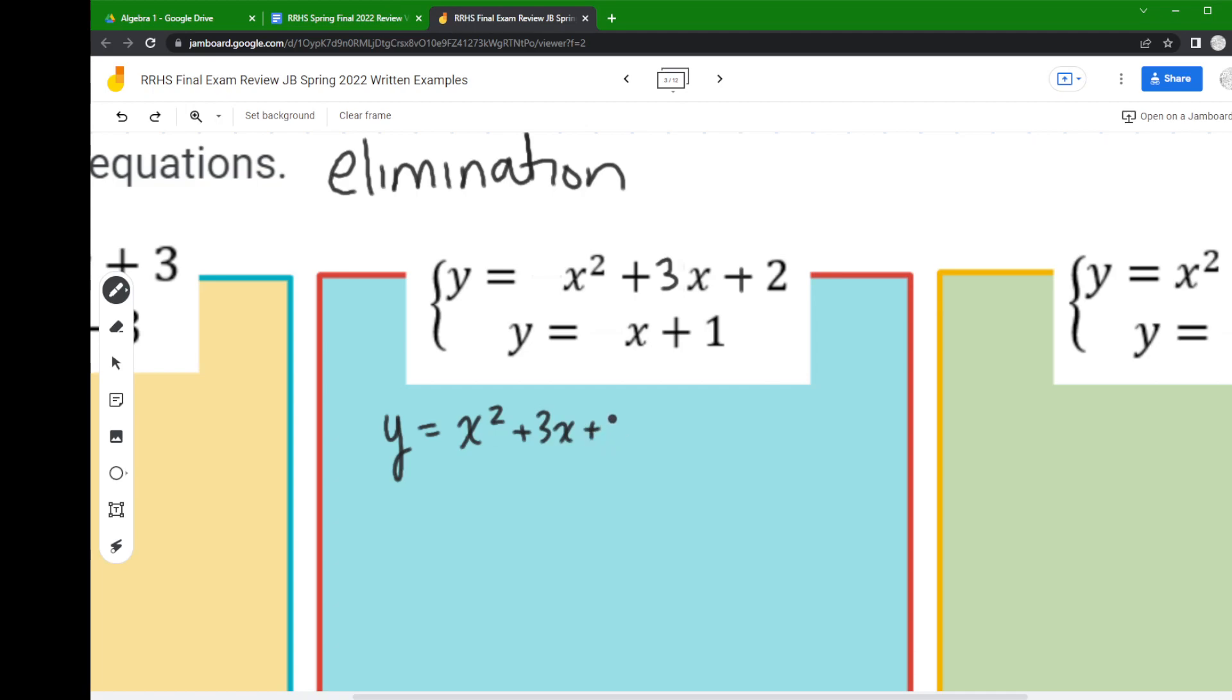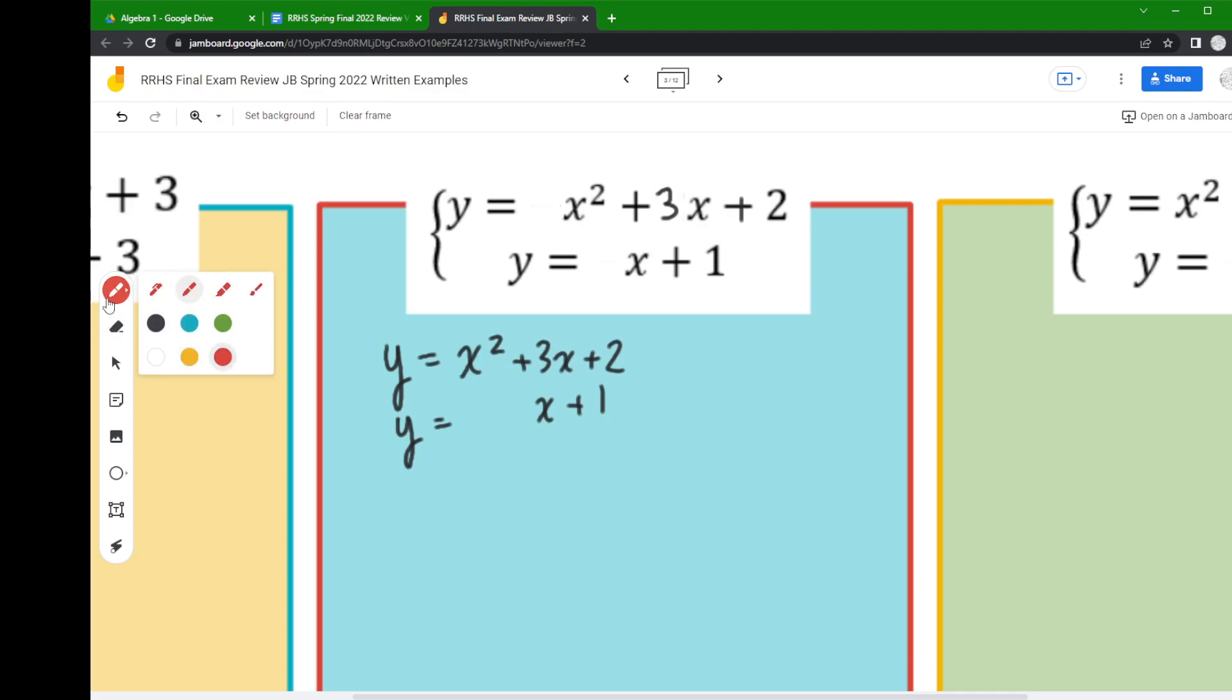So on this middle one I am starting to line up my like terms. Now the next thing that I need to do now that my terms are lined up, I'm gonna flip my signs. So down here I have a positive y it turns negative, I have a positive x it turns negative, and a positive one that turns negative. So when I add down, y plus negative y is zero, x squared plus nothing is x squared, and 3x minus x is 2x, and 2 minus 1 is 1.